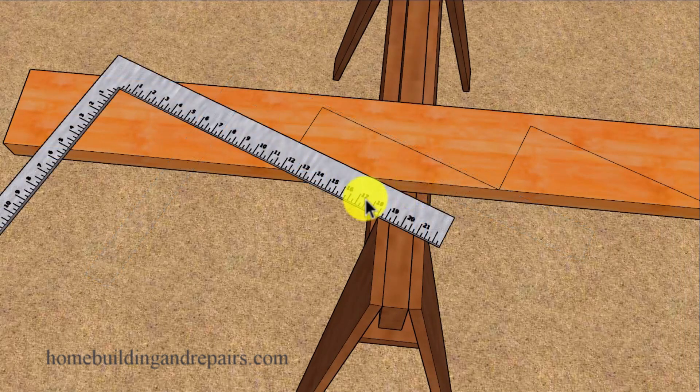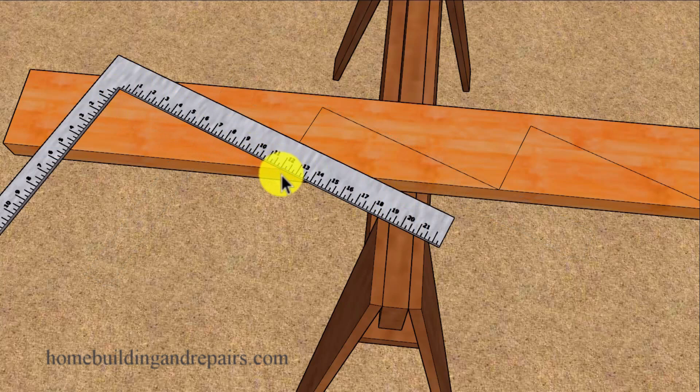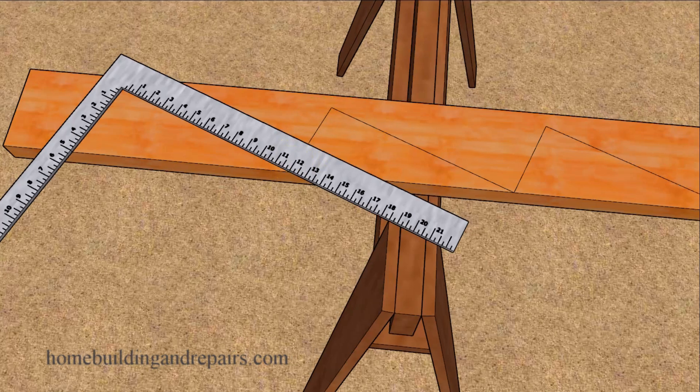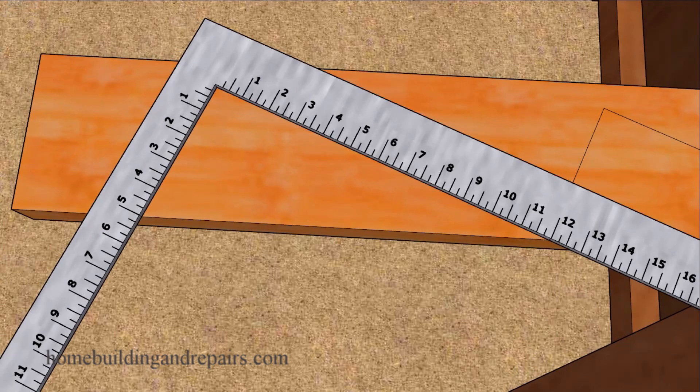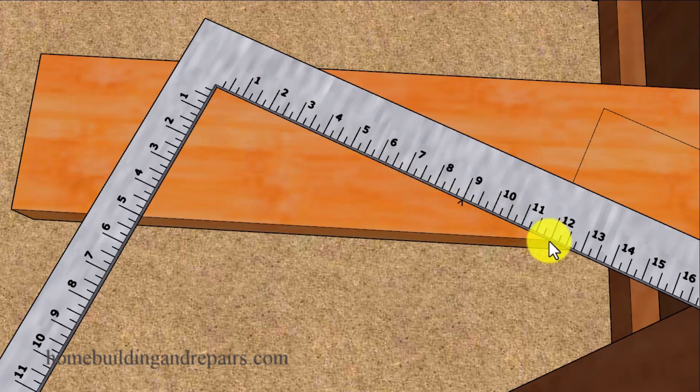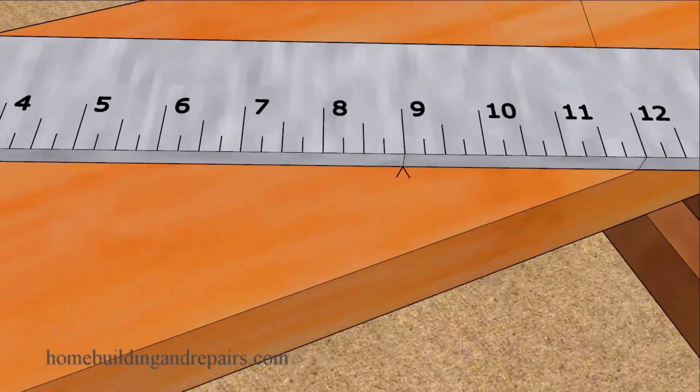We're simply going to slide the framing square over to where the number 12 here lines up with this line here. Double check to make sure that the framing square is still in its correct position of 5 and 12. Then we can simply come over 3 inches from the 12 inch measurement and then make a mark on the lumber, something like this.